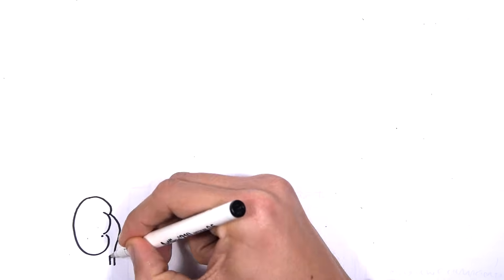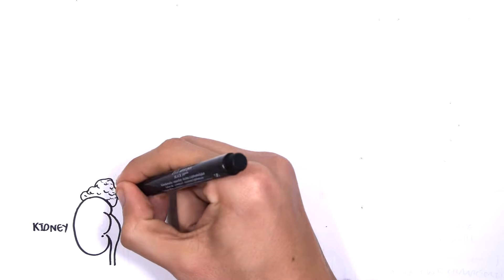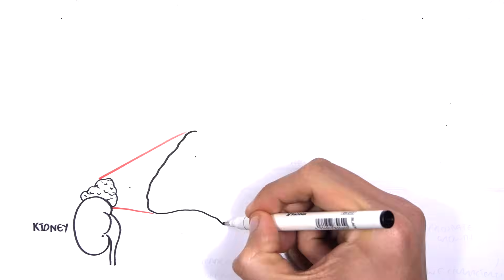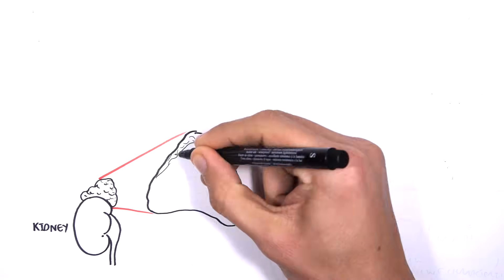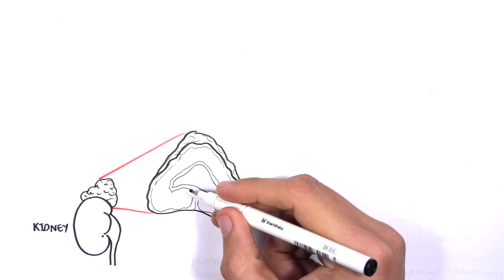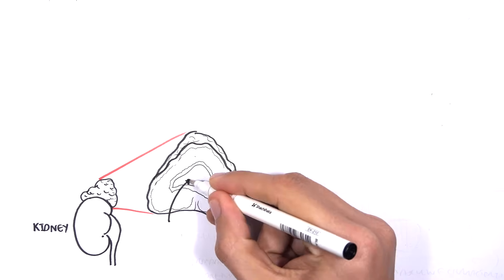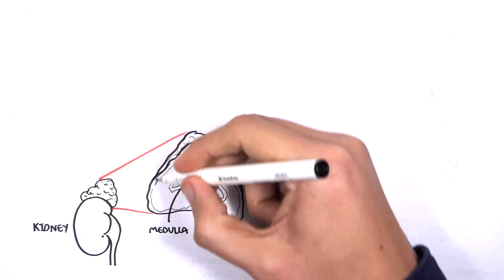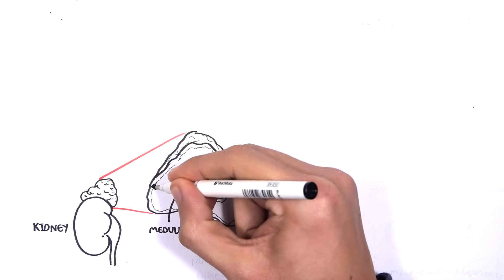The adrenal glands sit above our kidneys, and we have two kidneys, so we have two adrenal glands. Here is a cross-section of an adrenal gland. It is made up of an adrenal medulla in the center and the adrenal cortex on the outside, or periphery.